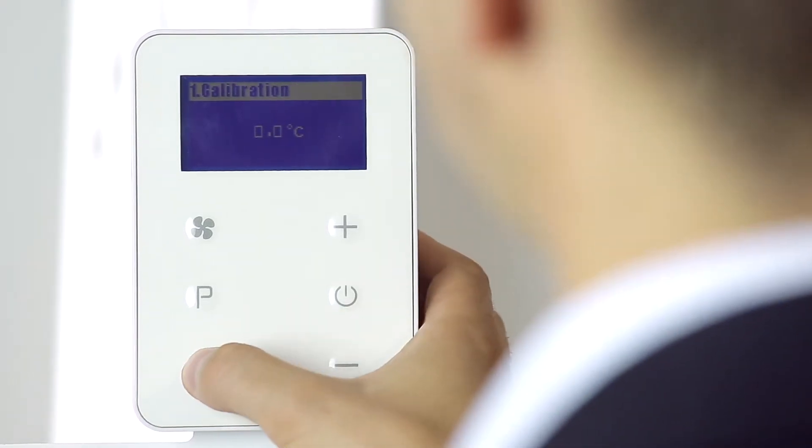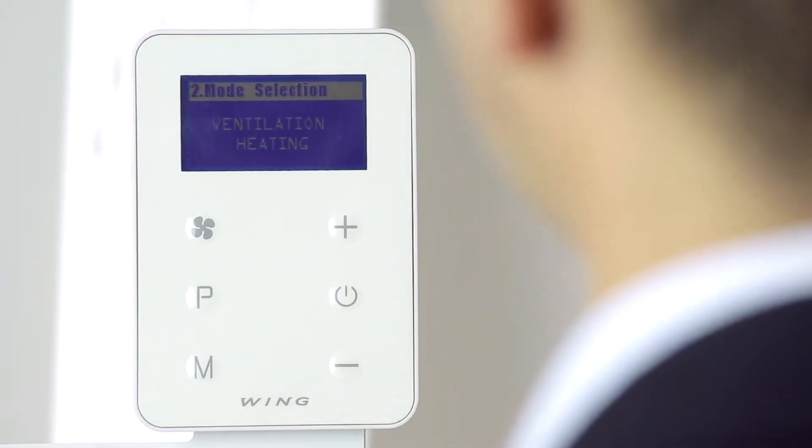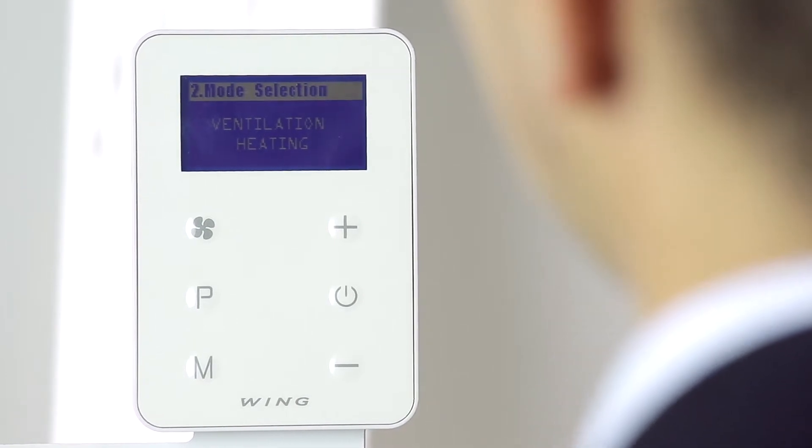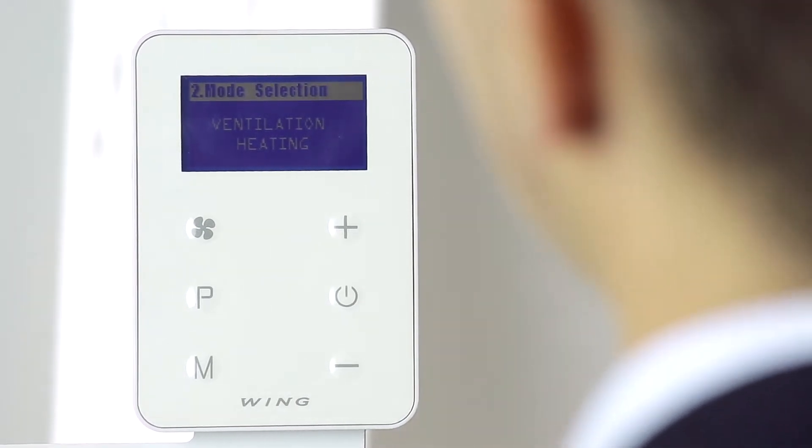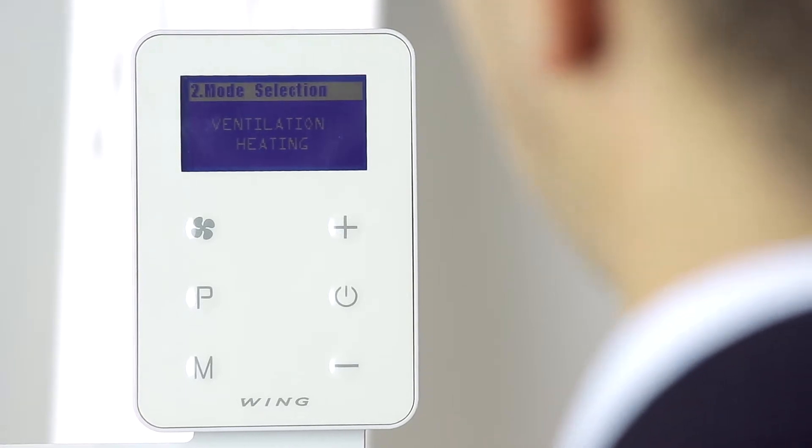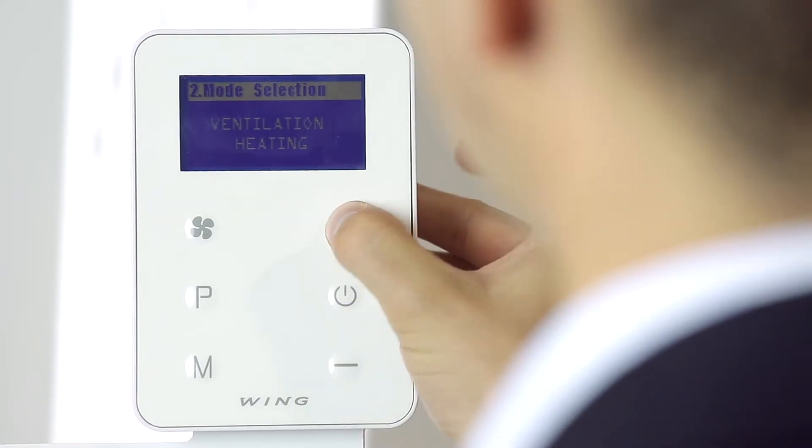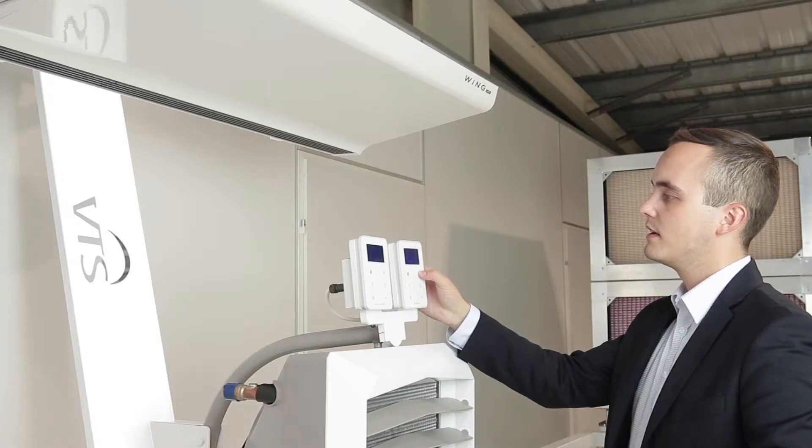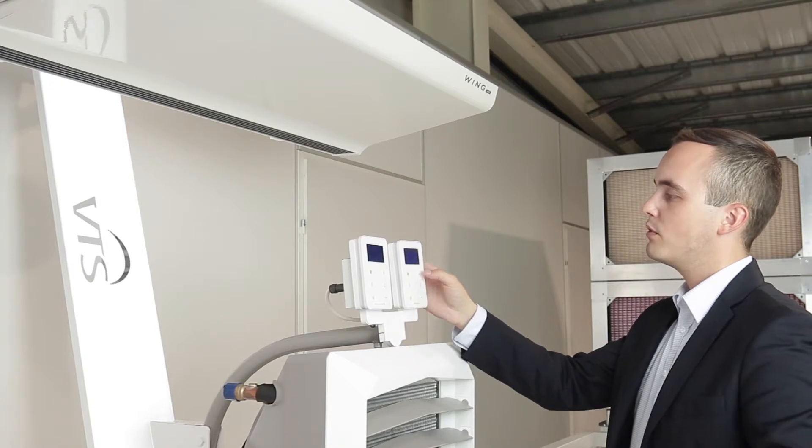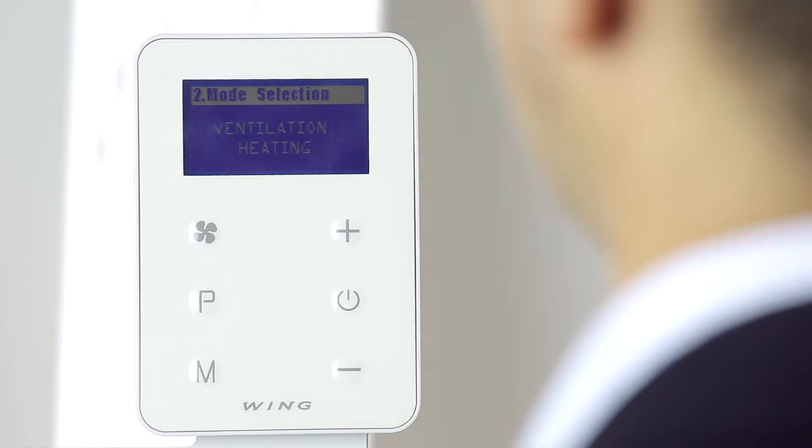Using the M button, we go to the second setting where we have the option of choosing that mode that will be displayed on the Wing EC controller main screen. It can be the ventilation mode, the heating mode, or a combination of both of these.